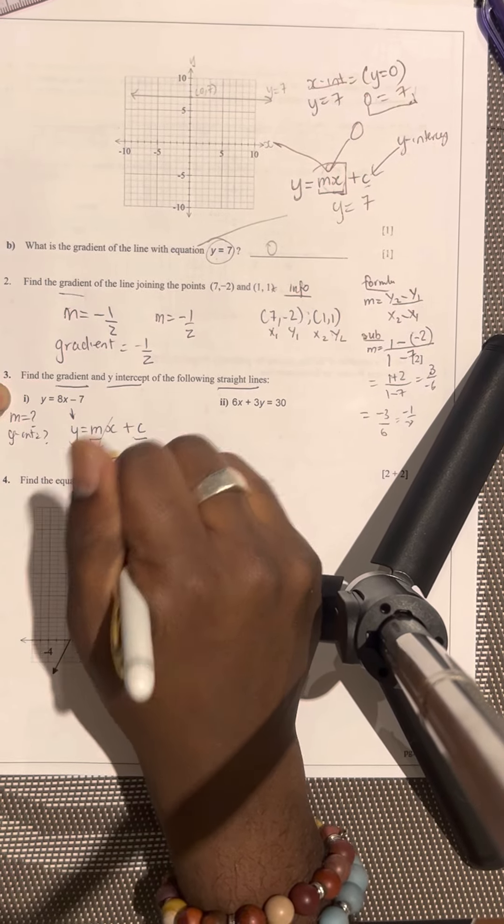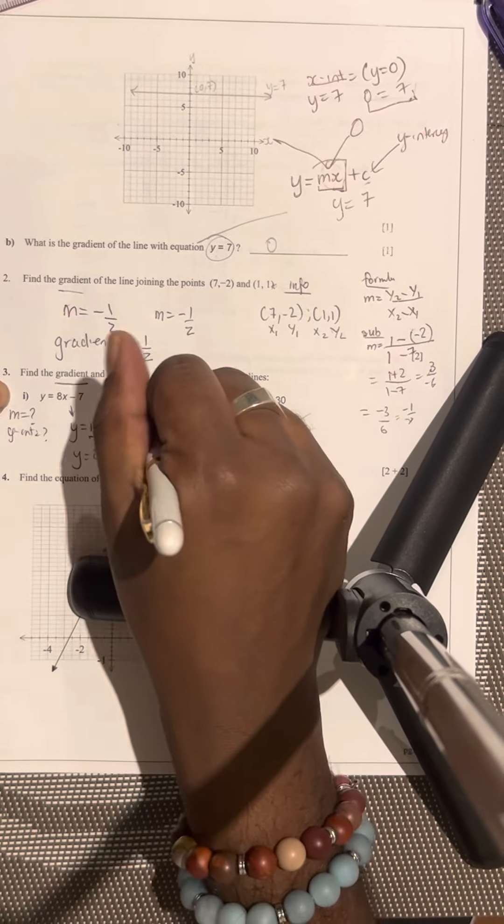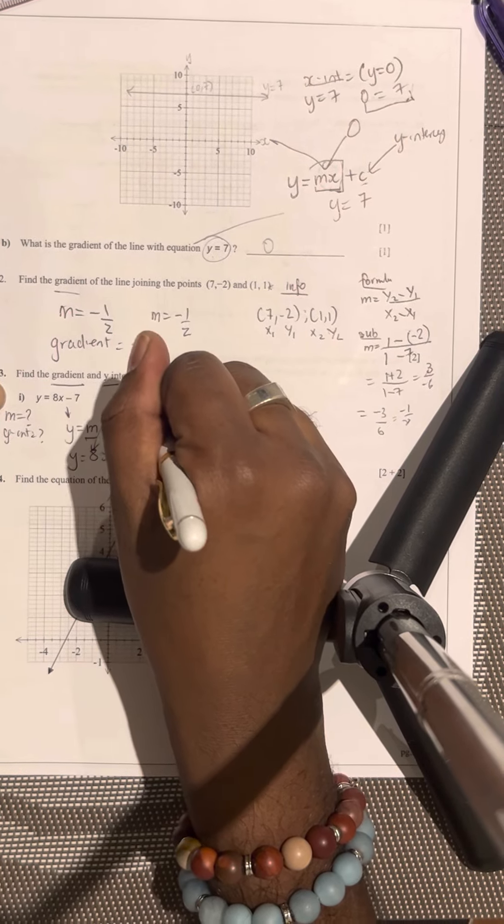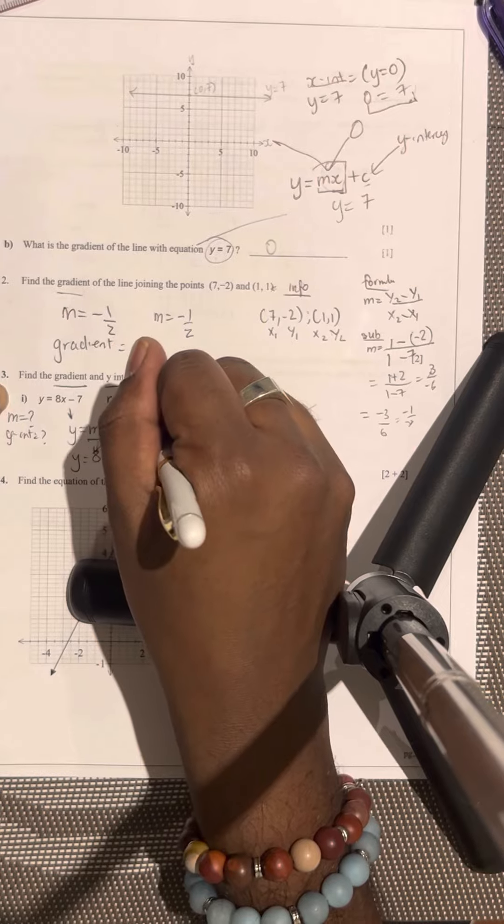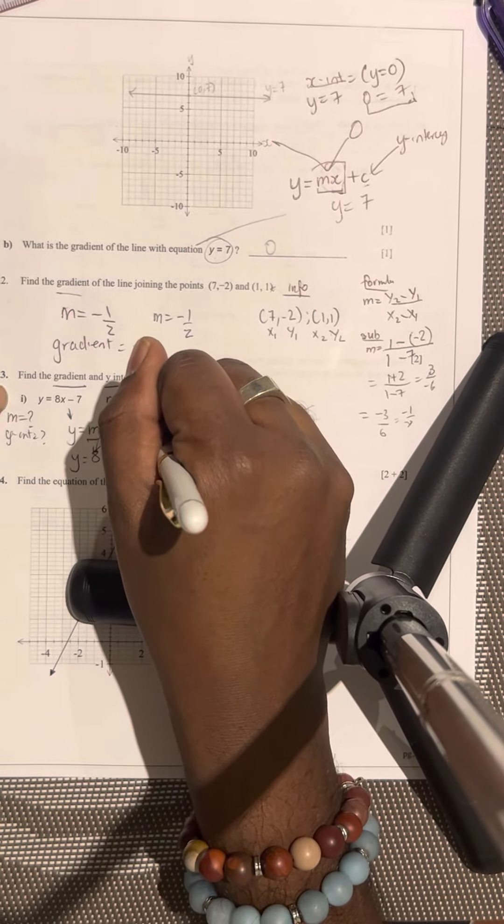and your y-intercept is going to be negative 7. You don't want to just write down 8. You have to write down m is equal to 8.